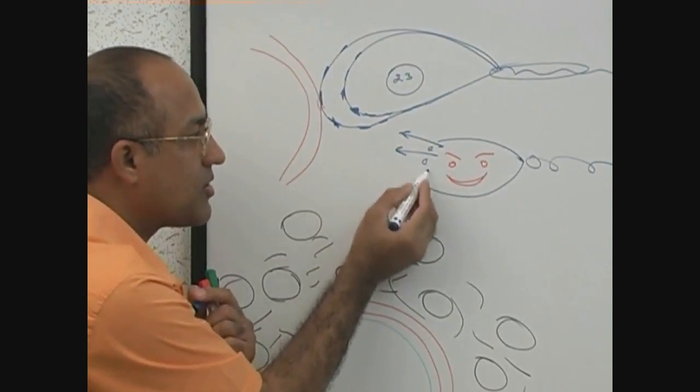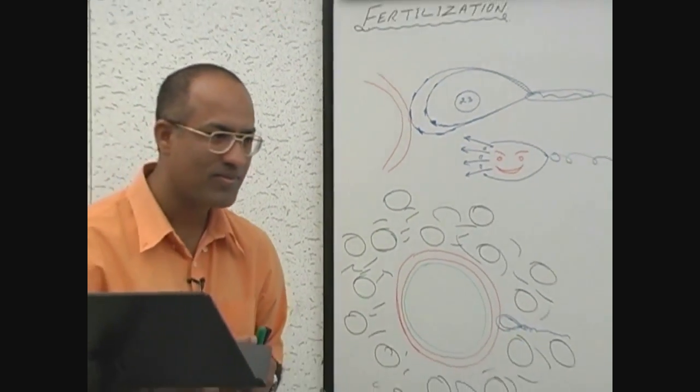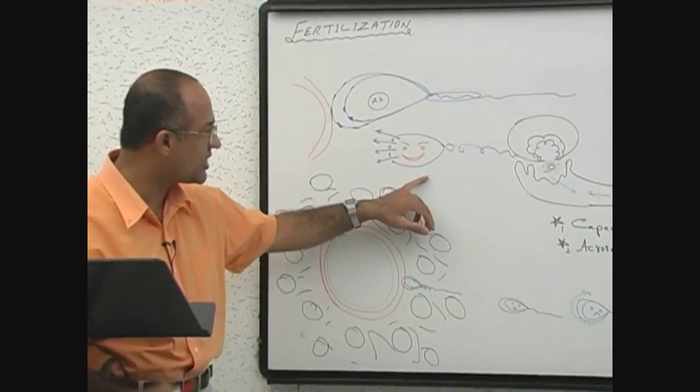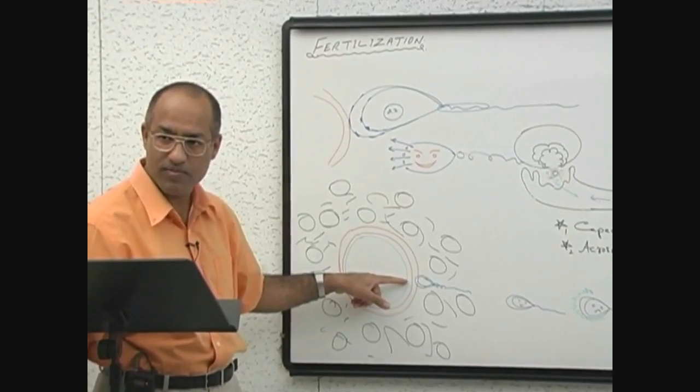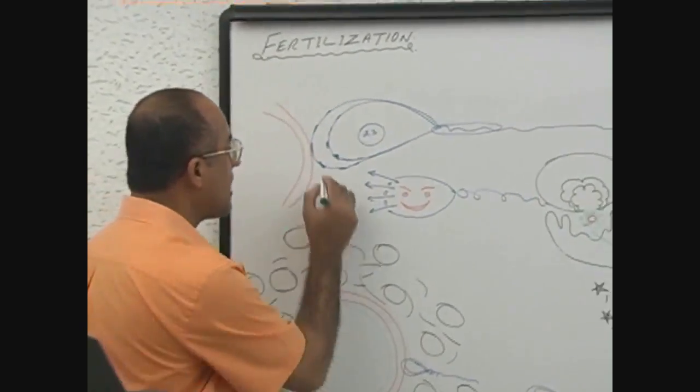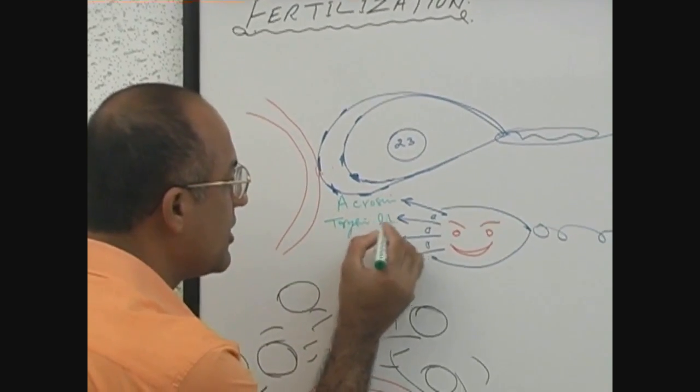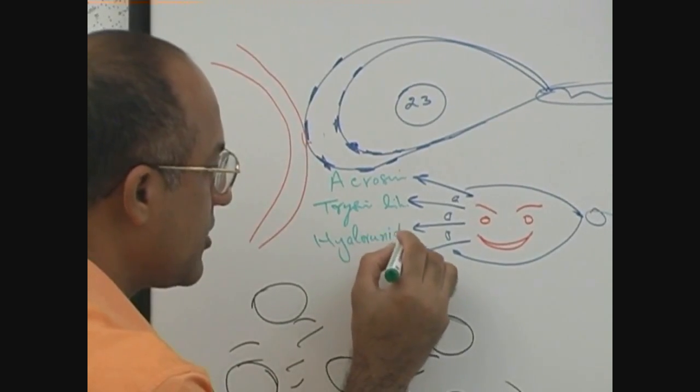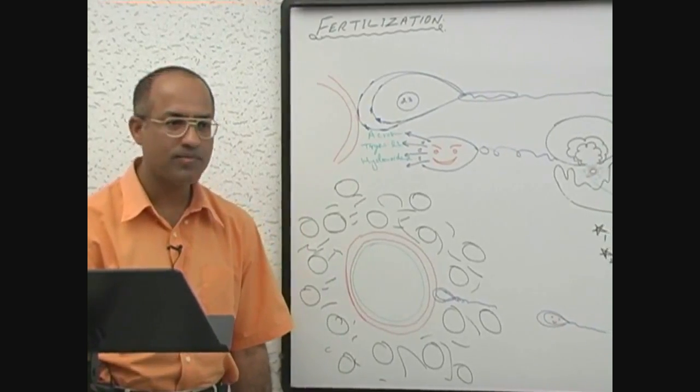It starts releasing enzymes so that it can digest away the zona pellucida. These enzymes are acrosine, trypsin-like substances, or hyaluronidases. All these enzymes work together and help in digestion of zona pellucida.